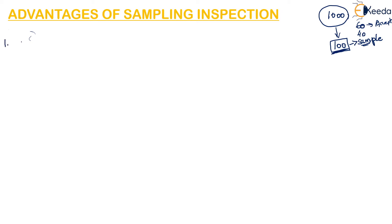The first advantage is that the cost and time required for sampling inspection is less when compared to hundred percent inspection. Since we are not inspecting all thousand items — only the hundred items — sampling inspection requires less cost and time.